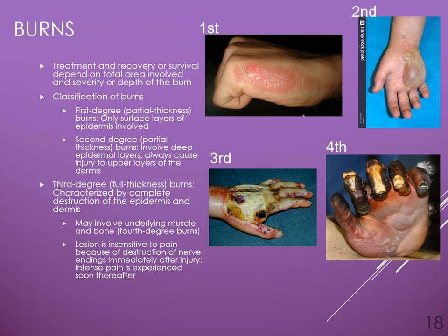Burns are classified as first, second, third, or fourth degree. First degree burns are partial thickness — only the surface layers of the epidermis are involved. Second degree burns are deeper, involving deep epidermal layers and always causing injury to the upper layers of the dermis. Third degree burns are full thickness, characterized by complete destruction of all of the epidermis and all of the dermis, and may involve underlying muscle. If bone is involved, that's referred to as a fourth degree burn.